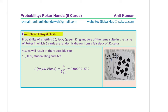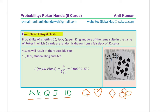Example 6: Royal Flush. This is Ace, King, Queen, Jack, and 10, all of the same suit. Since there are four suits, there are only 4 Royal Flush hands. The numerator is simply 4, divided by 52C5. Whenever we use the word flush, it means all cards of the same suit.